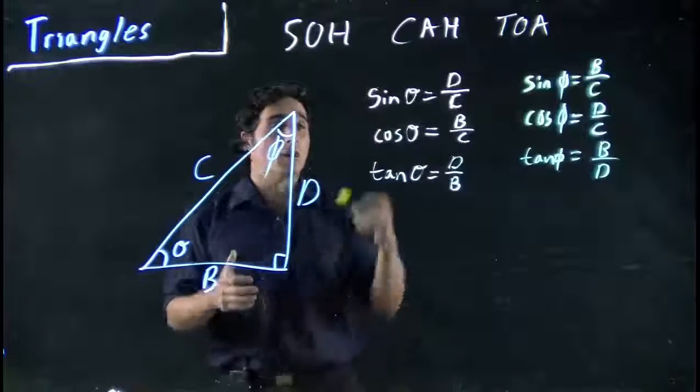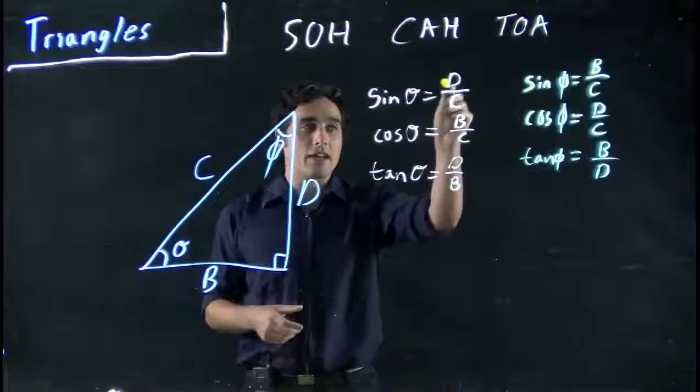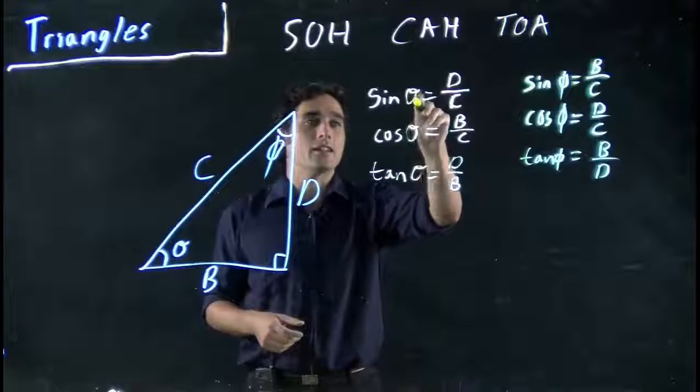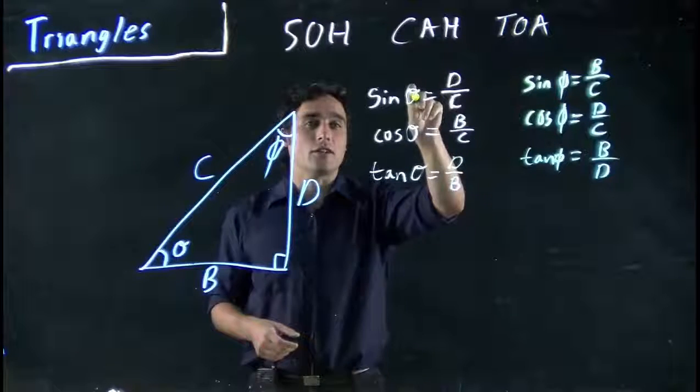So really, why is this important? This helps us solve a triangle. If I have any two of the things, I can solve the third. If I know an angle and a side, I can solve the other side. Or if I know both sides, I can solve the angle.